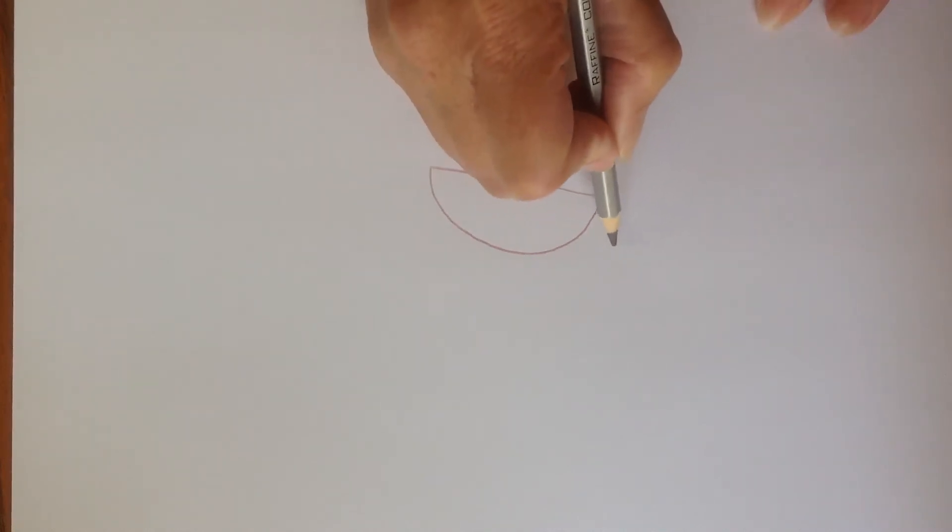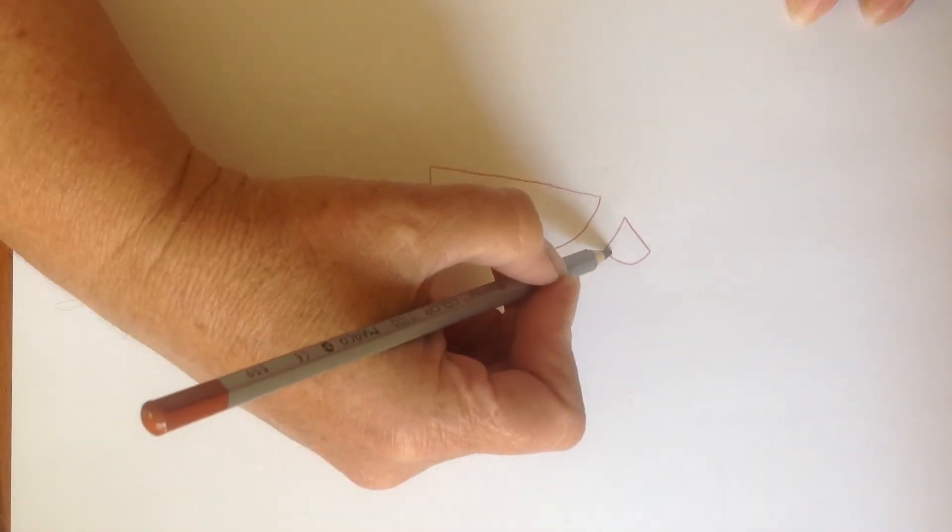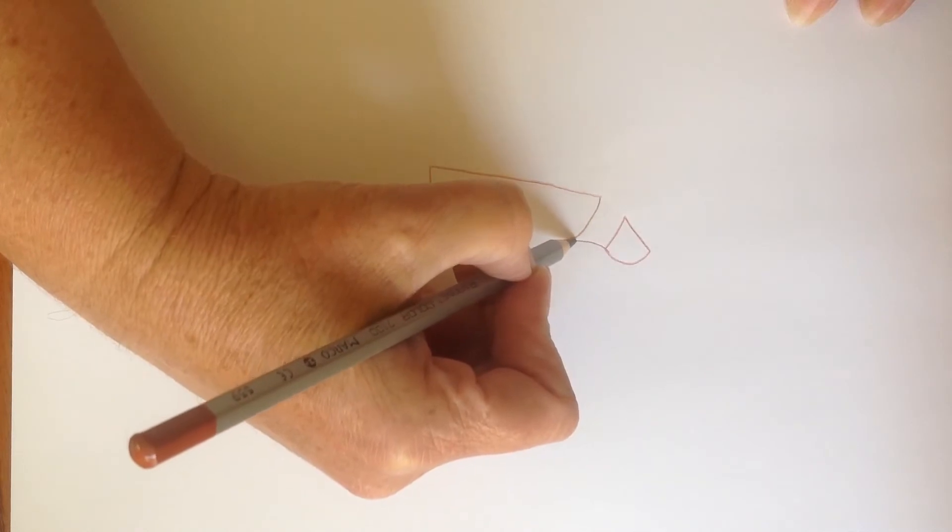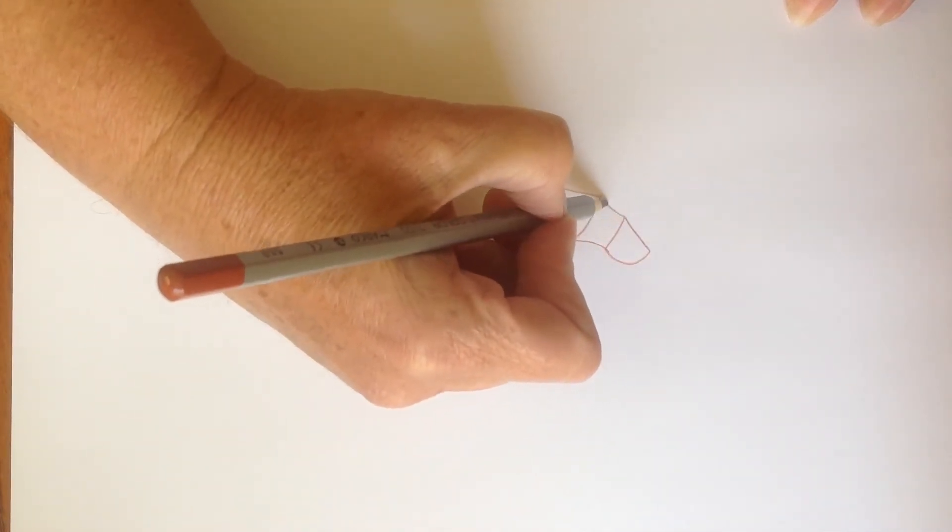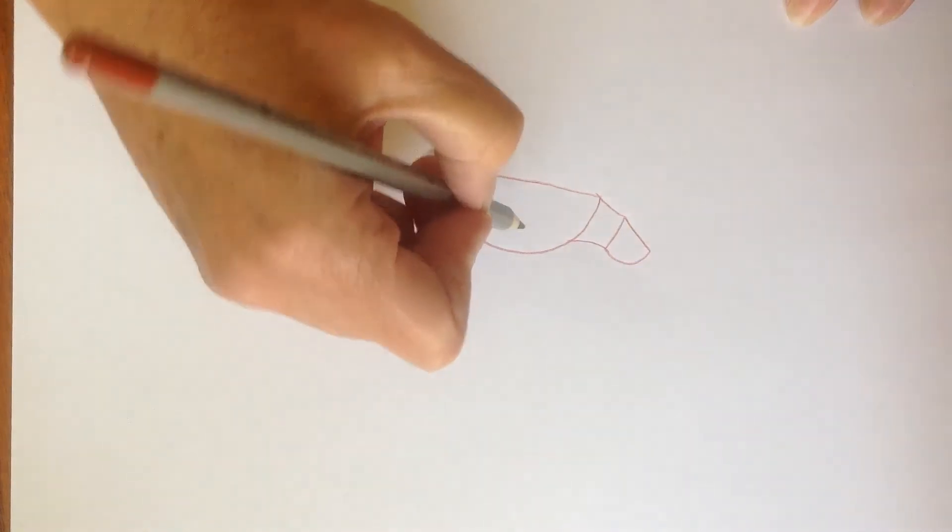And to start your marmot, you're going to draw kind of a turtle shell shape like that, and sort of a little wedge of pizza right over here. And then you're going to draw a couple of curved lines to connect the head and the body here.